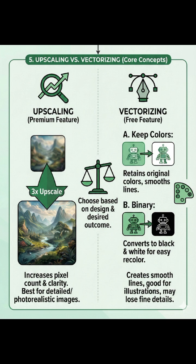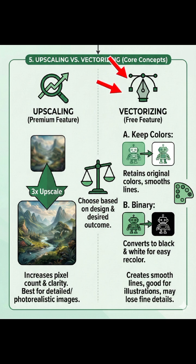Here is the secret sauce: you have two choices to fix the quality — upscaling or vectorizing. Choice A is upscaling; this adds pixels and clarity. Use this if your design is photorealistic or super detailed. Choice B, and this is my favorite, is vectorizing. This turns your pixels into smooth lines and is perfect for illustrations, and lets you easily recolor the design later.